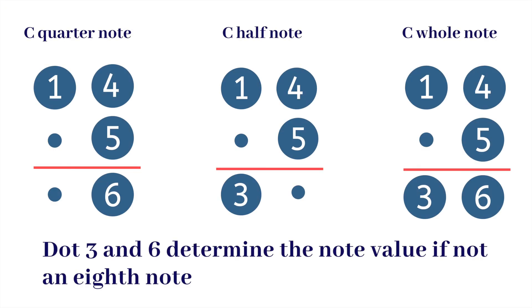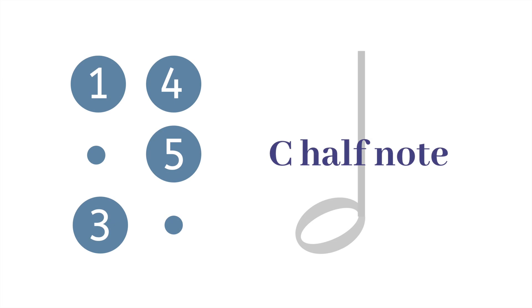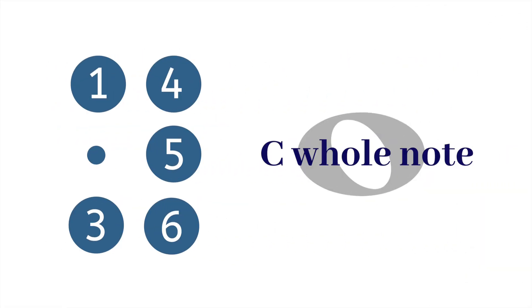These basic signs alone represent eighth notes. Now, if we want to change the note value, we have to add other dots. Since all of these basic signs are composed of dots between one, two, four, and five, we can only play with dots three and six. For example, taking C — which is dots one, four, five — if we add dot six, so one, four, five, six, we have a C quarter note. If we have one, four, five, three, we have a half note. And if we have one, four, five with both three and six, then it's a whole note.